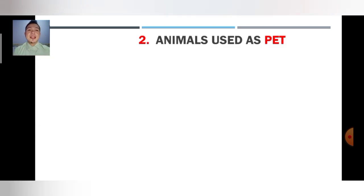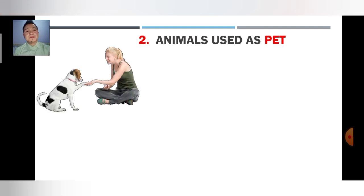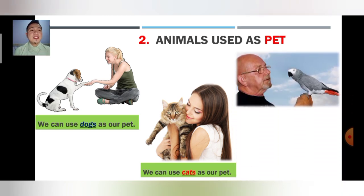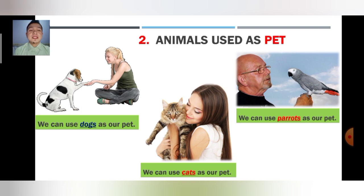Let's go on. Number two: animals used as pets. I know that some of you have a pet at home. Me, I don't have any pet here. We can use dogs as our pet — I know that you have dogs there. We can use cats as our pet. And also here, we can use parrots as our pet. These animals that I put here that you can see on your screen are only a few of those animals that you can use as your pet. Some people use snakes as their pet.